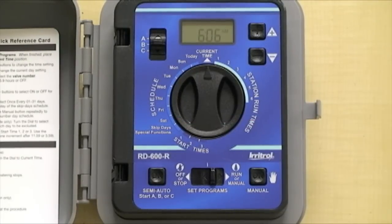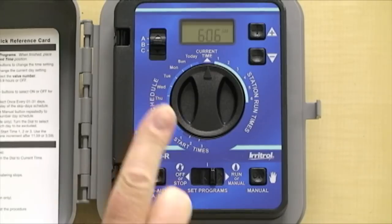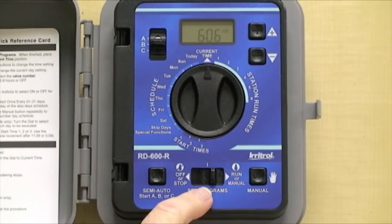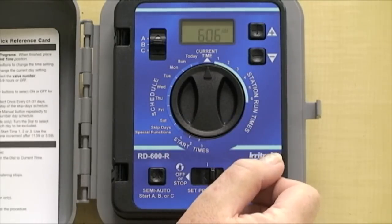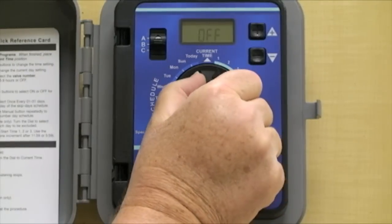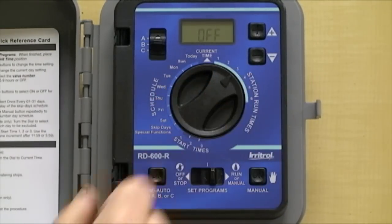This is a short video on how to manually operate a station on the rain dial. You leave the set program switch in run, point to the station that you want to have water manually. In this case I'll choose three.